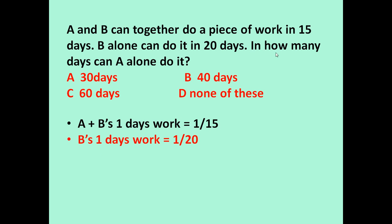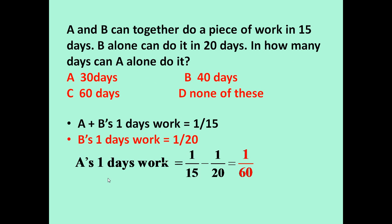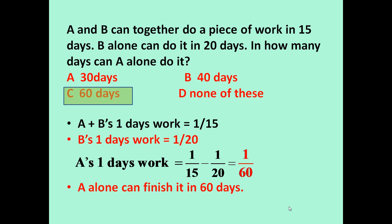Now we want to determine how many days A will take. A's one day work is equal to A plus B's one day work minus B's one day work, which equals 1 by 60. So if only A is doing the work, in one day he will be able to finish 1 by 60 of the work. If in one day he can finish 1 by 60 work, it means he will take 60 days to finish the work.